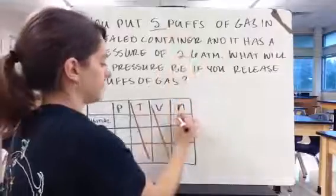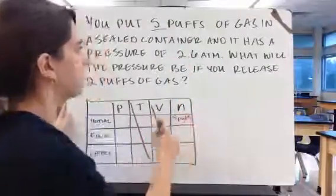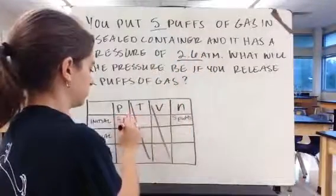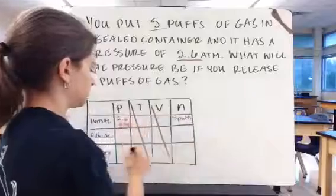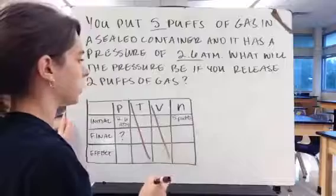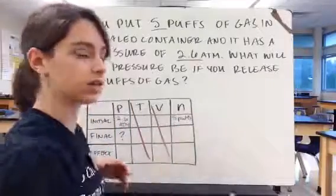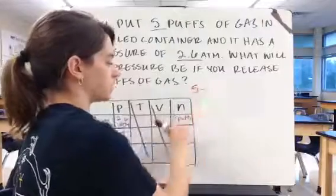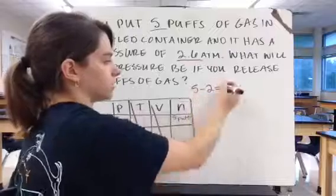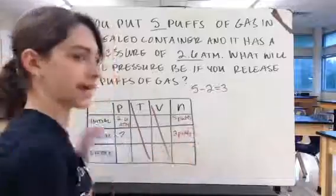Our problem tells us that we have five puffs, so that's going to go here. And it's in a sealed container, pressure of 2.6 atmospheres. What will the pressure be? So that's what we're looking for. If you release two puffs of gas, now, two is not going to go here, because we're losing two puffs. So to figure out how much we have left, we start with what we have. We lost two, so five minus two, that gives us three. So our container has in it three puffs of gas.